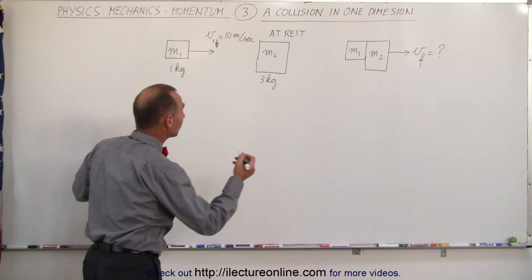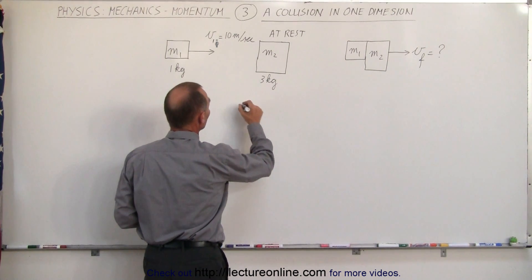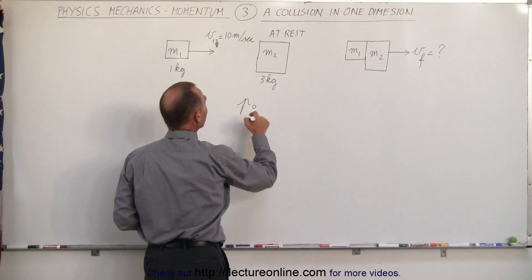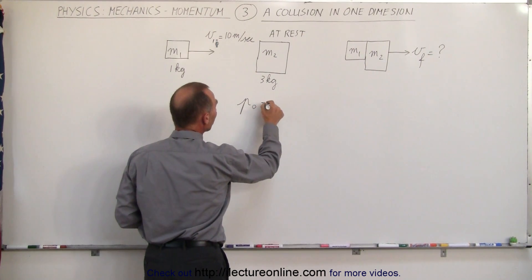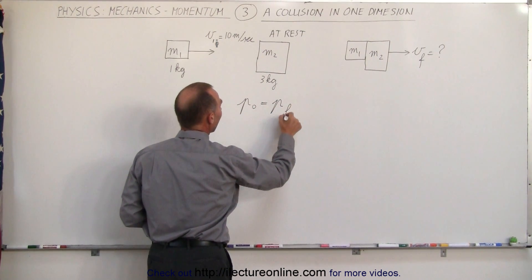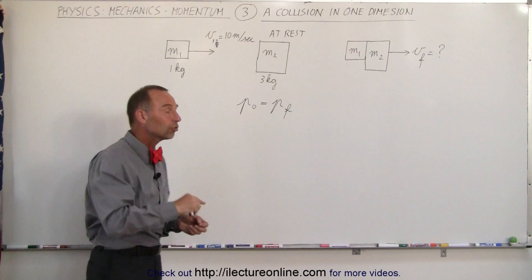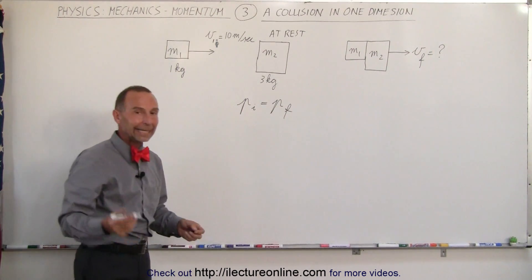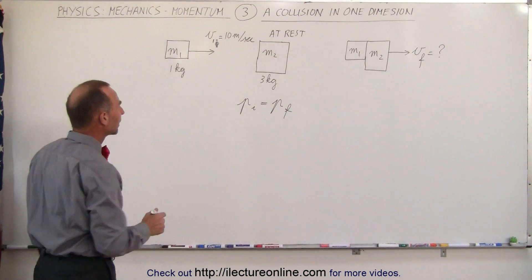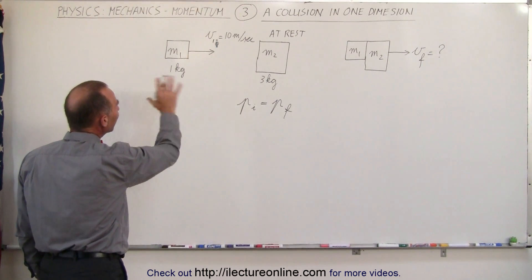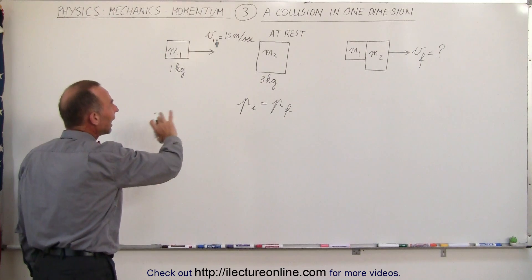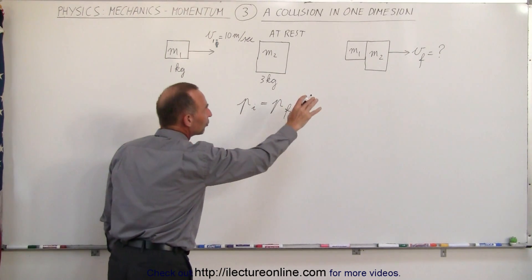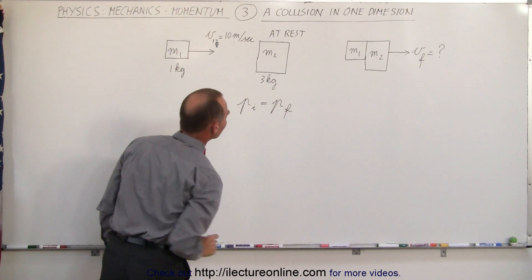So again, we start off with the concept that since momentum is conserved, the momentum before the collision, the initial momentum, must equal the momentum after the collision. So initial and final as we call it, or sometimes we use the letter I to indicate initial momentum. Let's add up the momentum of each object before the collision, and then we'll find the momentum of both objects after the collision.